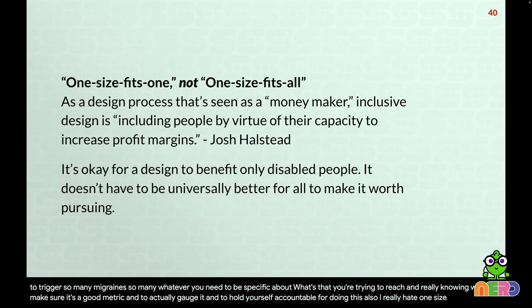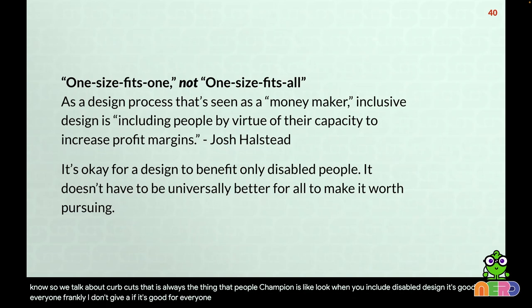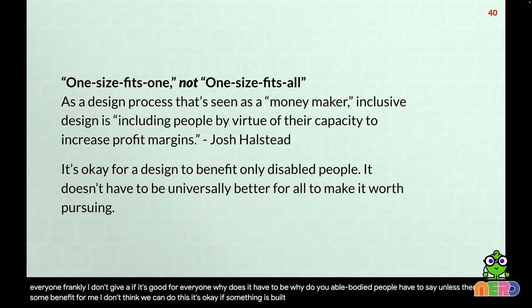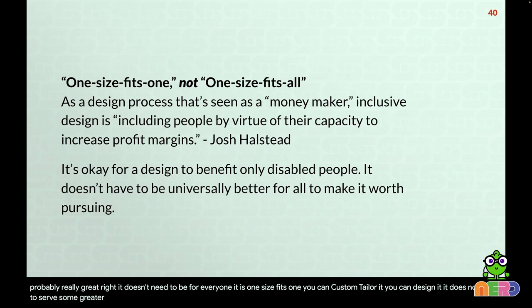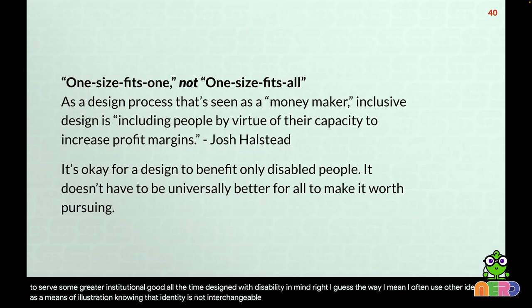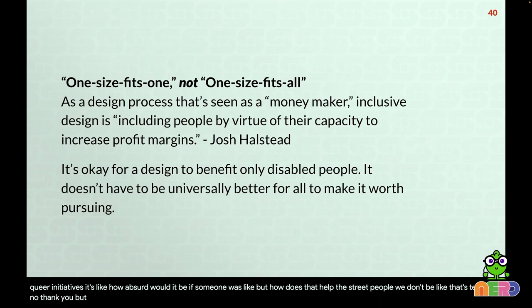I really hate one-size-fits-all. Curb cuts are always championed as proof that accessible design is good for everybody. Frankly, I don't give a damn if it's good for everyone. Why does it have to be? Why do able-bodied people need to say 'unless there's a benefit for me, I don't think we can do this'? It's okay if something is built specifically for disabled people — that is fine and actually probably really great. It doesn't need to serve some greater institutional good. One size fits one. If someone were doing queer initiatives and someone asked 'but how does that help straight people?' — we'd all agree that's terrible. But we do this with disability all the time.